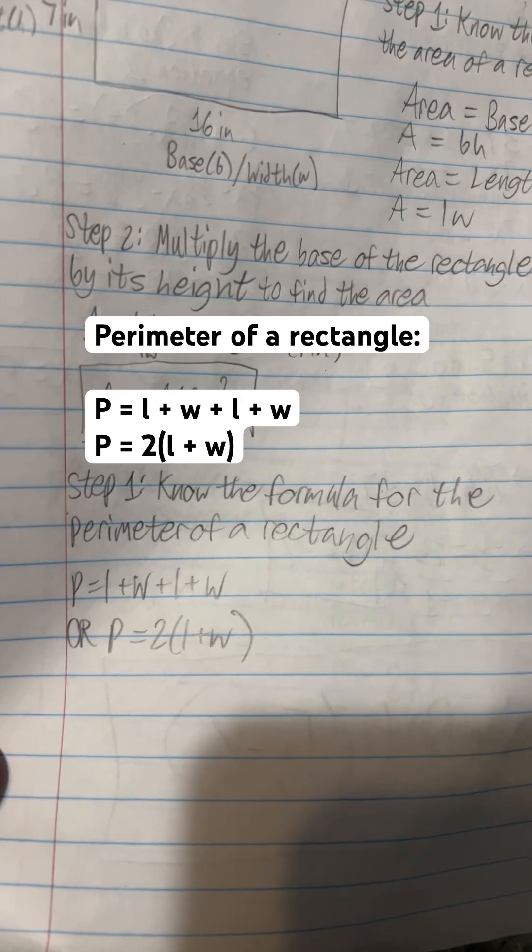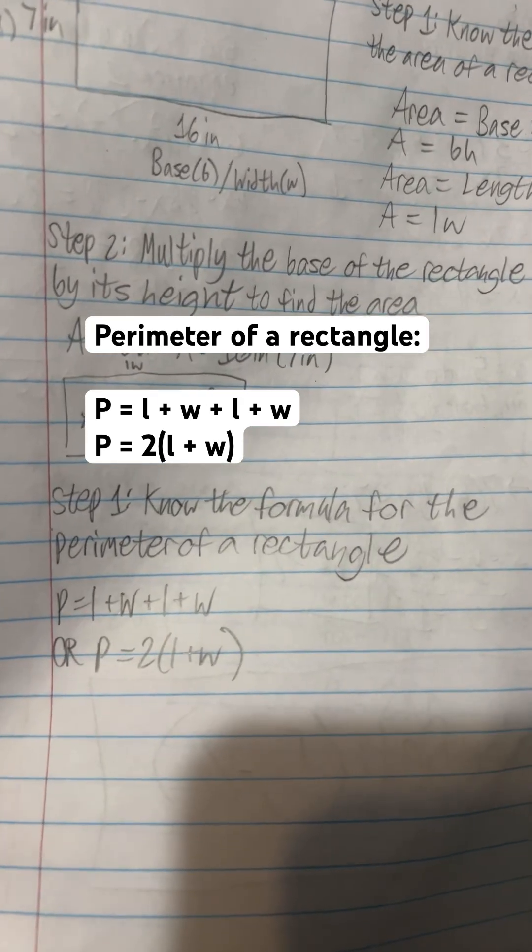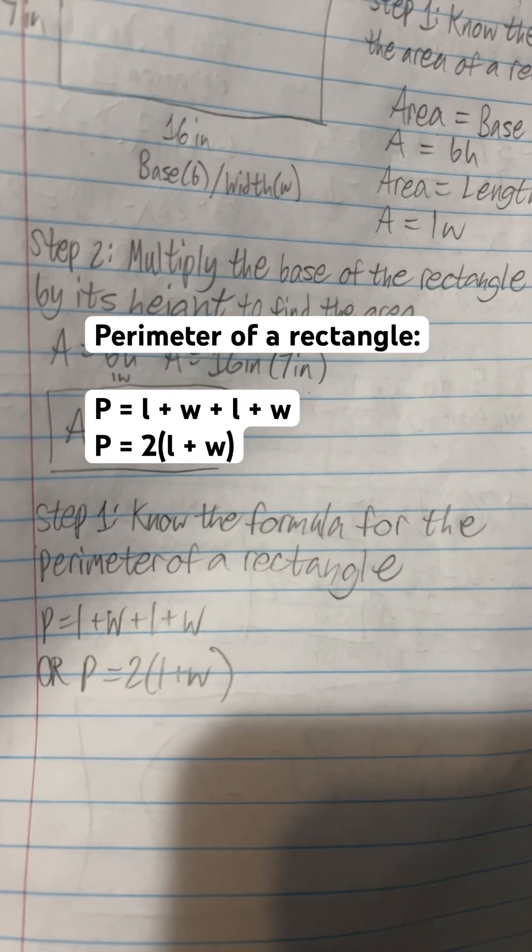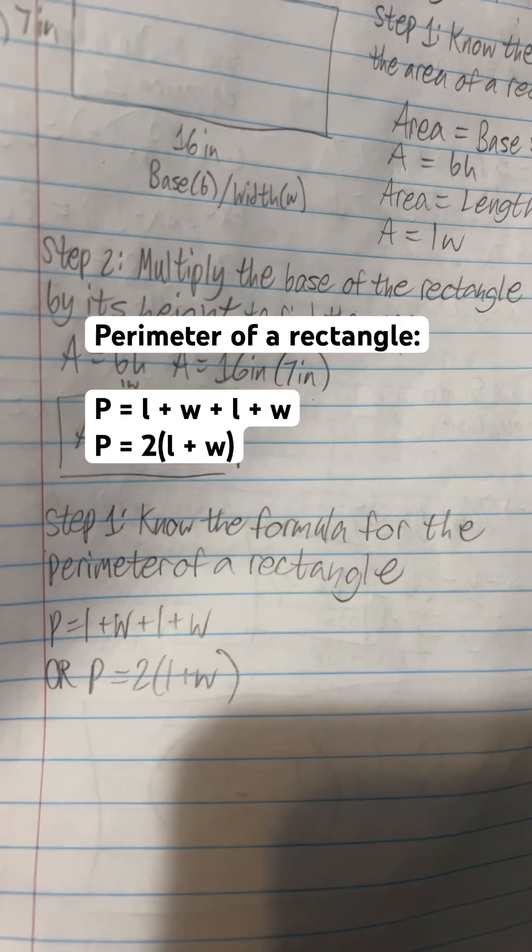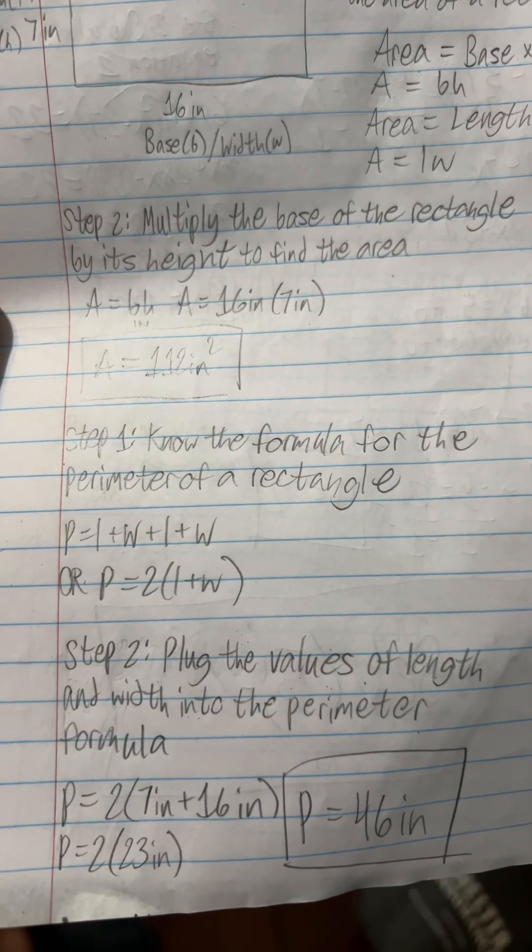And that is perimeter P is equal to length plus width plus length plus width, or twice the sum of length and width. Step two is to plug in the values and you'll get 46 inches.